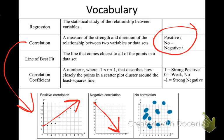Students often get confused on negative correlation because they see the word 'negative' and think it means something bad — that's not true. Negative correlation just means as one data set increases, the other decreases. For example, as the temperature outside gets colder, sales of winter coats typically go up. That's a negative correlation — one's going down as the other's going up. It does not mean a bad thing.